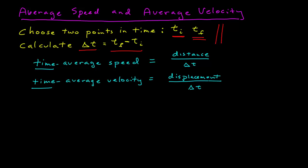That's it. Now remember, when you dealt with distance and displacement, we found that they're not always the same — often they're different. By the same token, the time average speed and the time average velocity are often different. This is because distance is a scalar, so the time average speed is a scalar, and because displacement is a vector, the time average velocity is a vector.